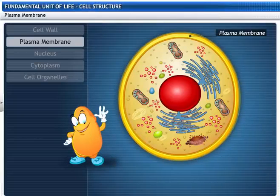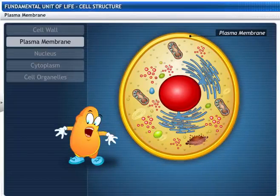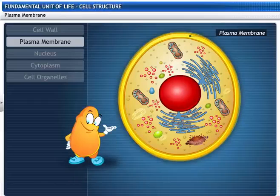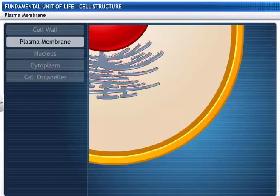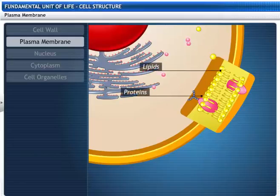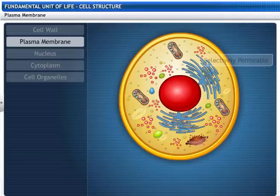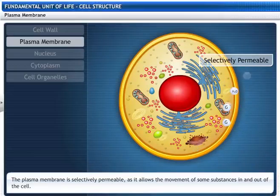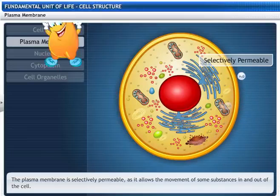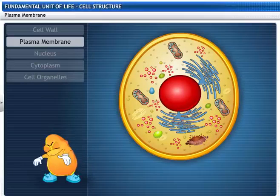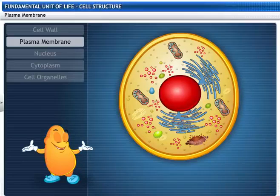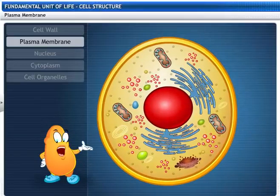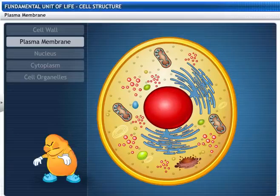Let's take a closer look at the next membrane called the cell membrane or the plasma membrane. It is a living membrane made of lipoproteins. The plasma membrane is selectively permeable as it allows the movement of some substances in and out of the cell. I'll show you the different ways in which substances move through it.